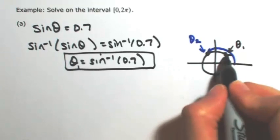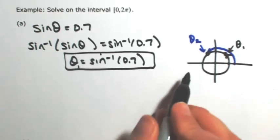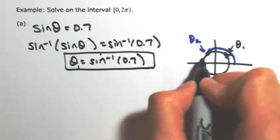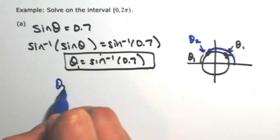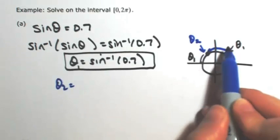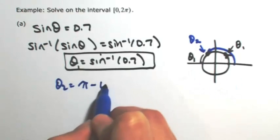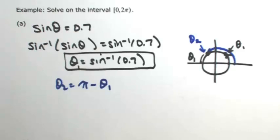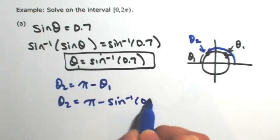So looking at θ₁, you can see that that's the leftover part between θ₂ and π. So if I want to find θ₂, I would take π minus that little piece. In other words, π minus θ₁. So θ₂ is π minus the inverse sine of 0.7.